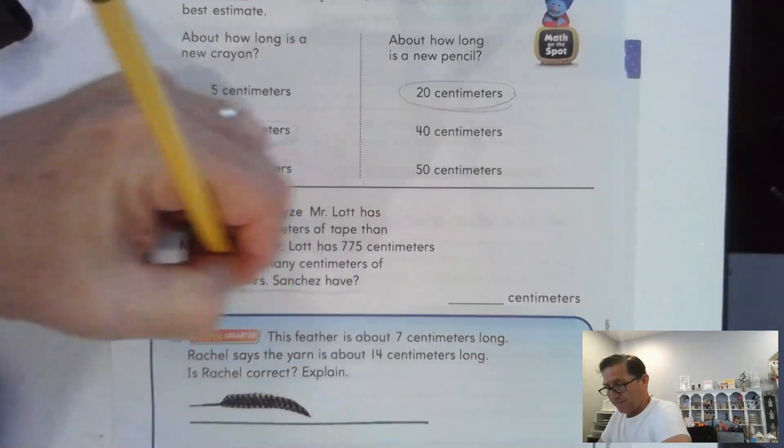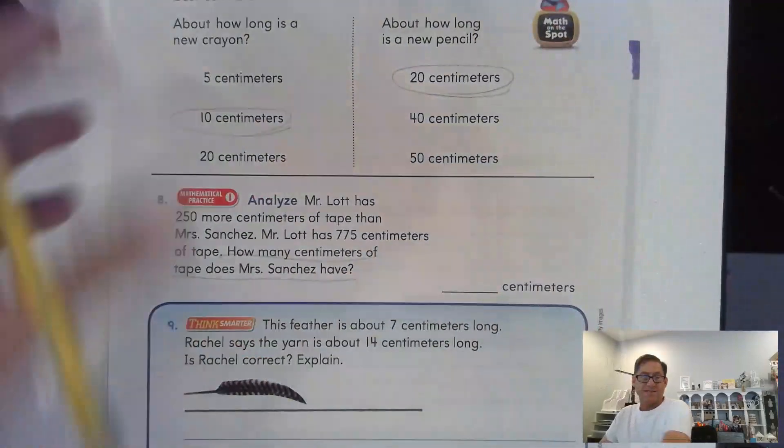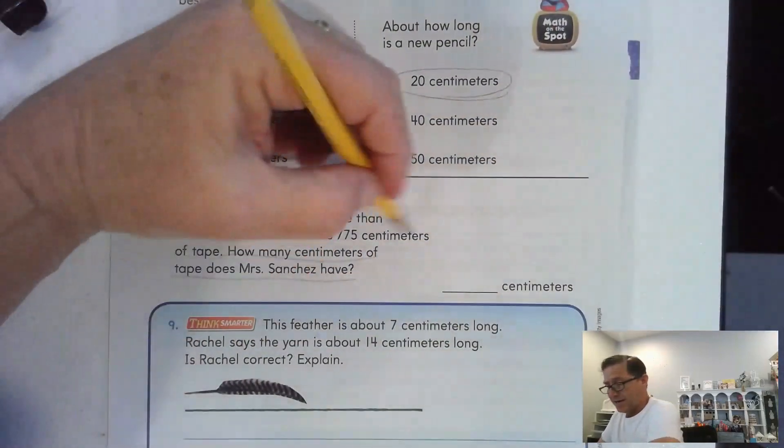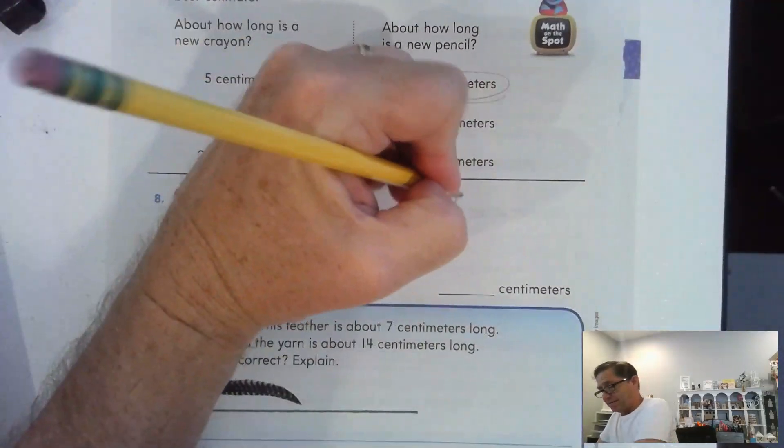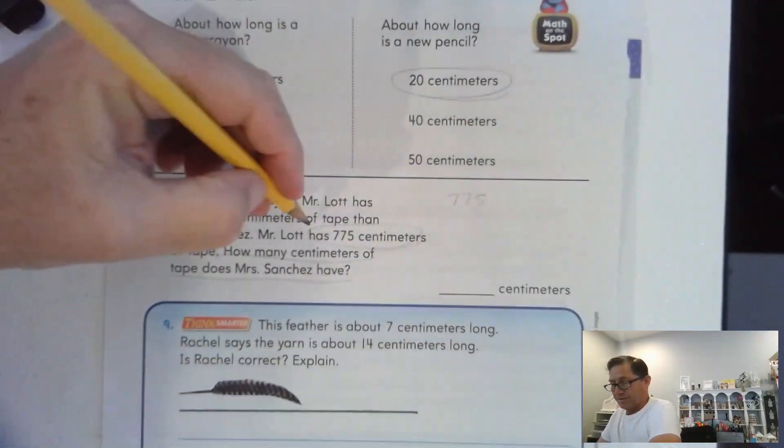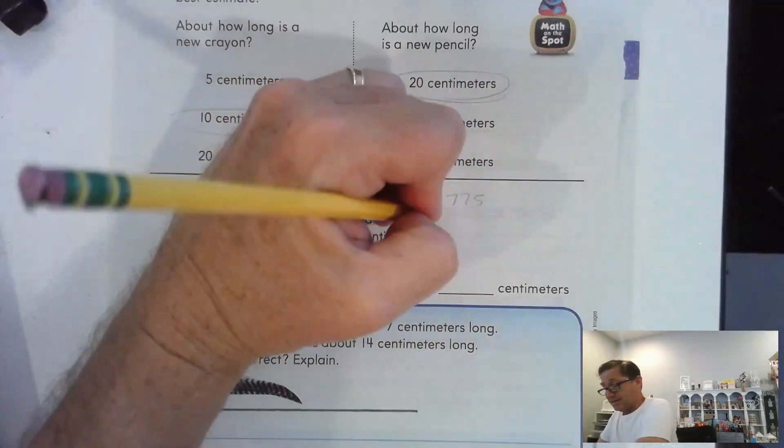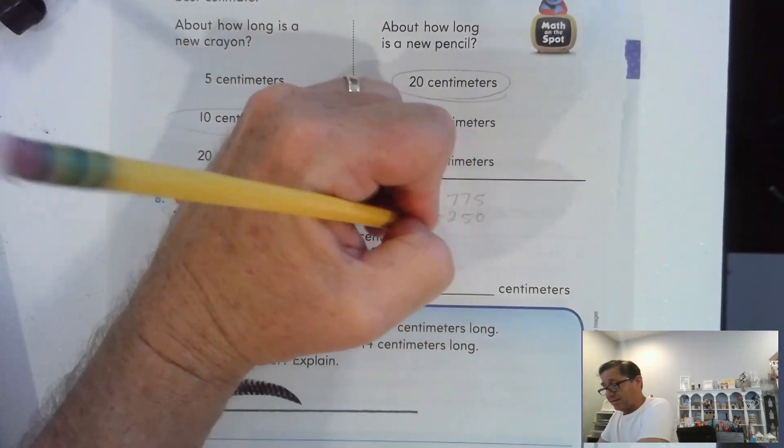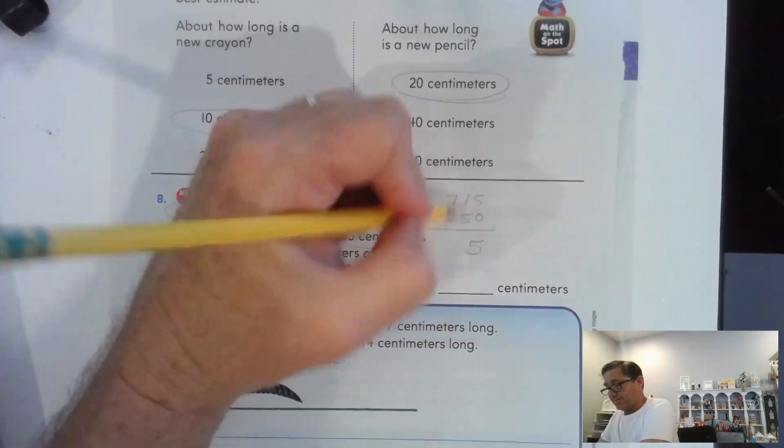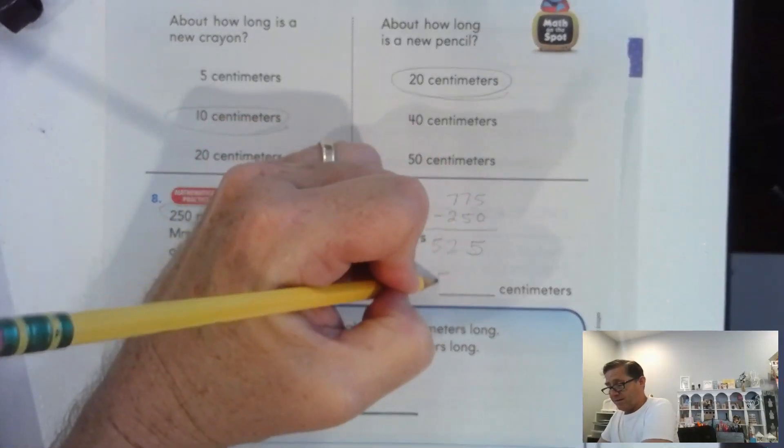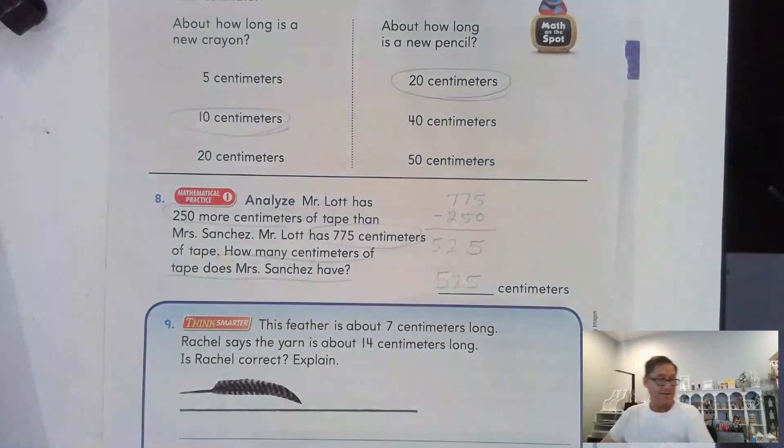Alright, so we have to try to figure out how much Mrs. Sanchez has. Mr. Lott has 775, which is 250 more than Mrs. Sanchez. So we're going to subtract 250. So 525 centimeters.